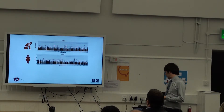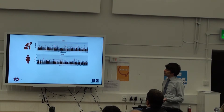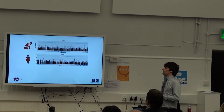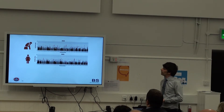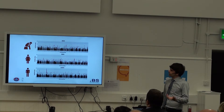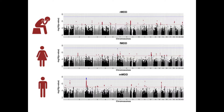For female depression, we did get one hit that was approaching genome-wide significance, however it still didn't achieve the level we're looking for. But when examined with male depression, we did actually find one hit that went above the line, giving us a genome-wide significant hit for male depression.